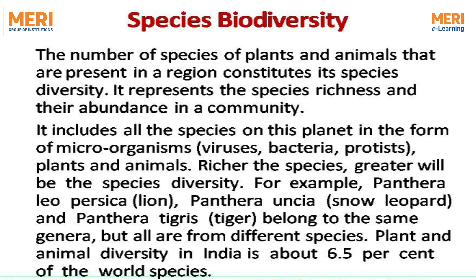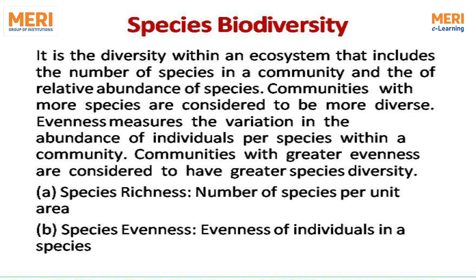For example, Panthera pardus (leopard), Panthera leo (lion), and Panthera tigris (tiger) belong to the same genus but are different species. Plant and animal biodiversity accounts for about 6.5 percent of the world's species. Species diversity is the diversity within ecosystems that includes the number of species in a community and the relative abundance of species. Communities with more species are considered more diverse. Evenness measures variation in the abundance of individuals among species within a community, and communities with greater evenness are considered to have greater species diversity.